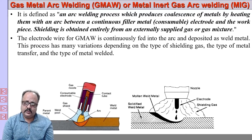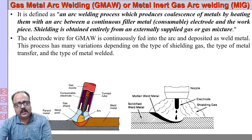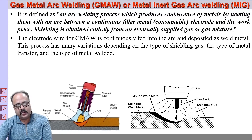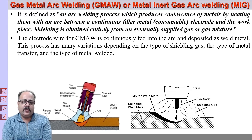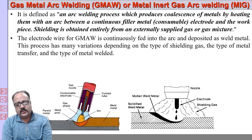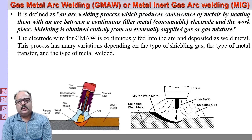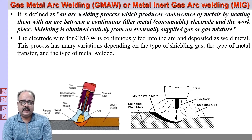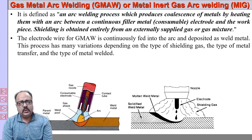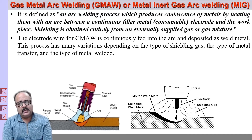Unlike shielded metal arc welding, here we do not have a flux coating over the electrode — the electrode is bare. Although called bare, it actually has a very light copper coating. This copper coating serves two purposes: it prevents oxidation of the electrode in storage, and it increases electrical conductivity, which also increases arc stability.